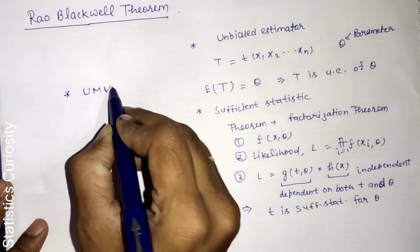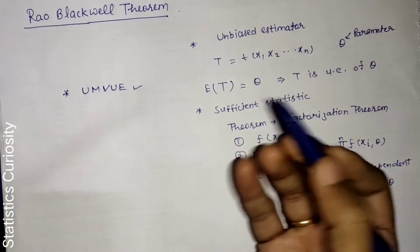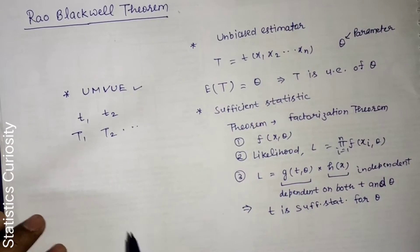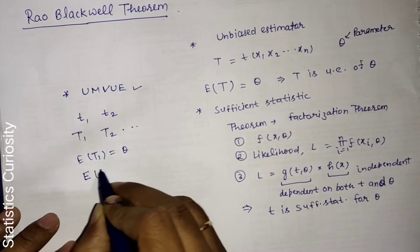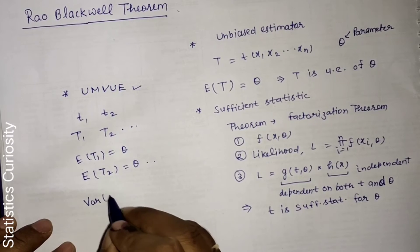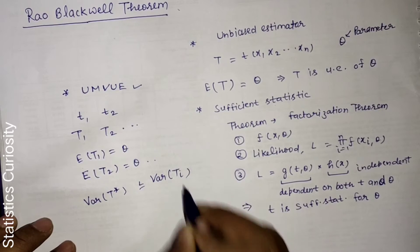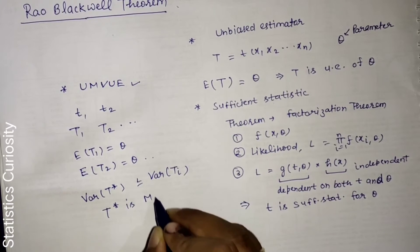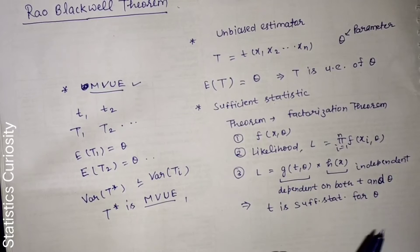The third term is UMVUE — uniformly minimum variance unbiased estimator. If we have several unbiased estimators T1, T2, etc., where E(T1) = theta and E(T2) = theta, the estimator T* that has minimum variance among all unbiased estimators is called the minimum variance unbiased estimator.